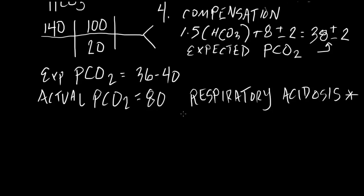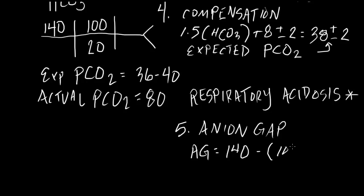The next step is to look at our anion gap. In this particular case, our anion gap is 140 minus 100 plus 20, which equals 20. An anion gap of 20 is, by definition, a high anion gap metabolic acidosis.